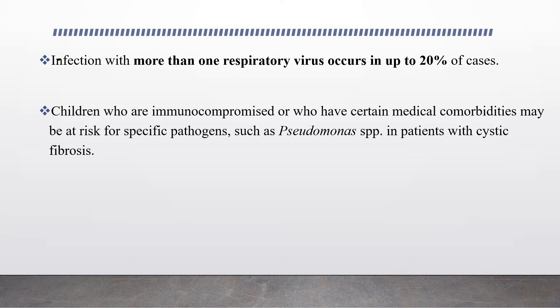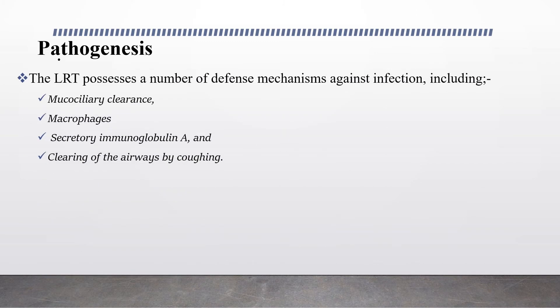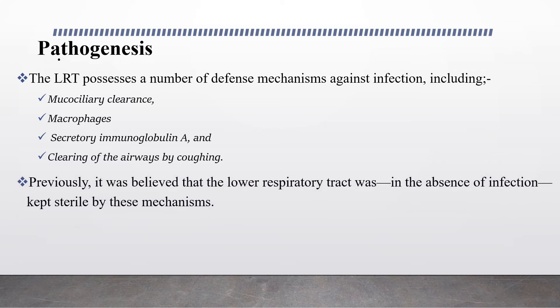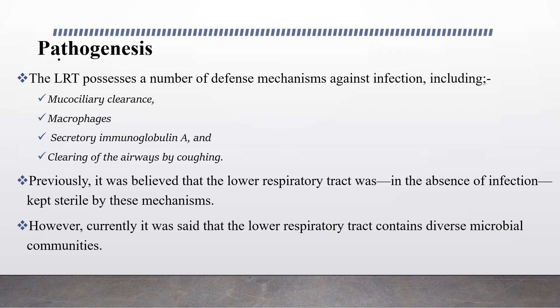Children who are immunocompromised or who have certain medical comorbidities may be at risk for specific pathogens such as Pseudomonas species in patients with cystic fibrosis. Regarding pathogenesis, the lower respiratory tract possesses a number of defense mechanisms against infection including mucociliary clearance, macrophages, secretory IgA, and clearing of the airways by coughing. Previously it was believed the lower respiratory tract was kept sterile by these mechanisms; however, it is now understood that the lower respiratory tract contains diverse microbial communities.